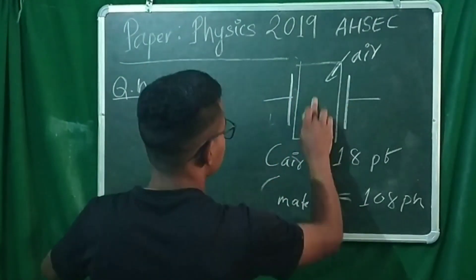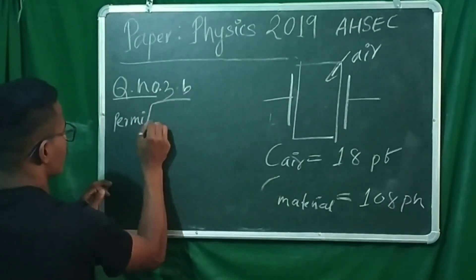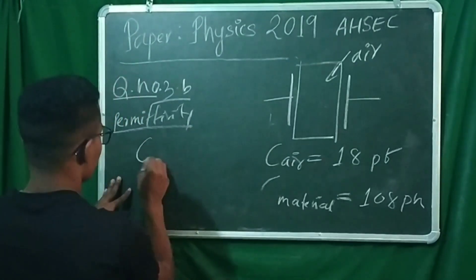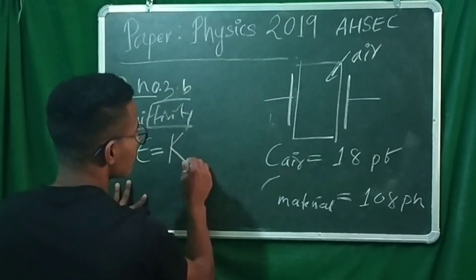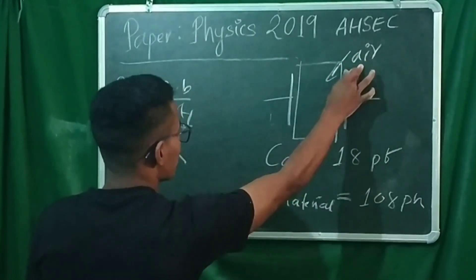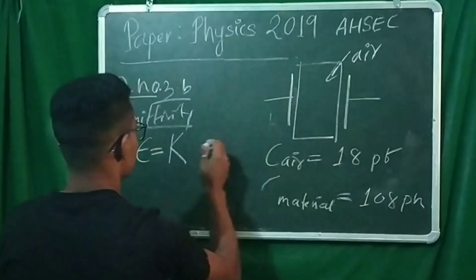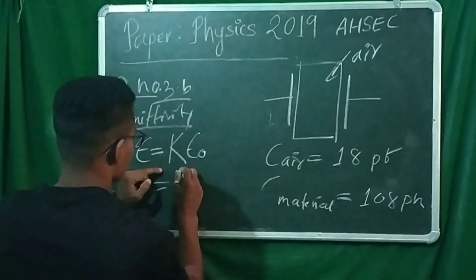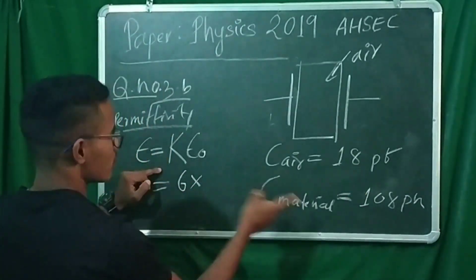We can also write the permittivity relation: epsilon equals k times epsilon naught, where epsilon naught is the permittivity of free space. The dielectric constant k equals 6, which is 6 times the permittivity of free space.